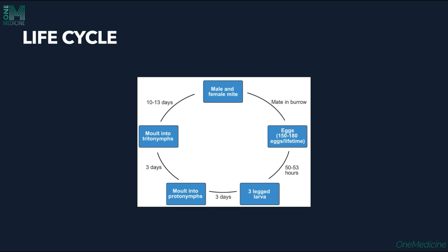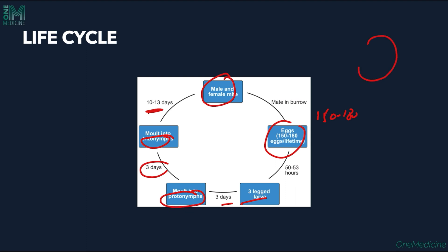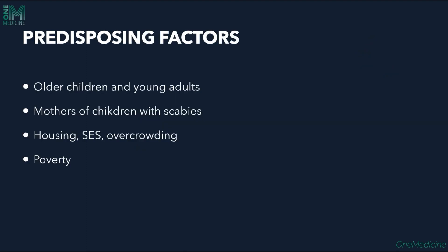The male and female mites mate in the burrows. The female lays about 150 to 180 eggs in its life cycle. After about 50 to 53 hours, the eggs hatch to form a 3-legged larva. After 3 days, it forms protonymphs, which after 3 days form tritonymphs, and after 10 to 13 days, adult formation occurs again. This completes the whole life cycle of the scabies mite.